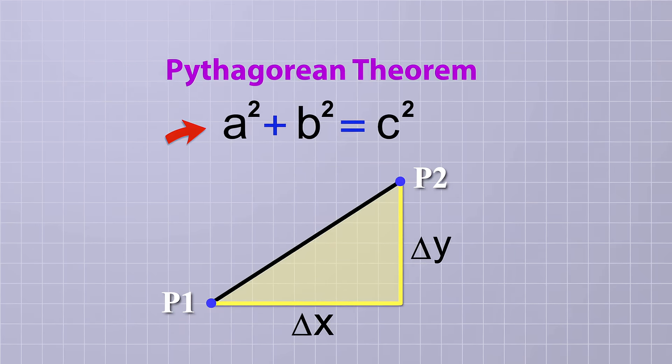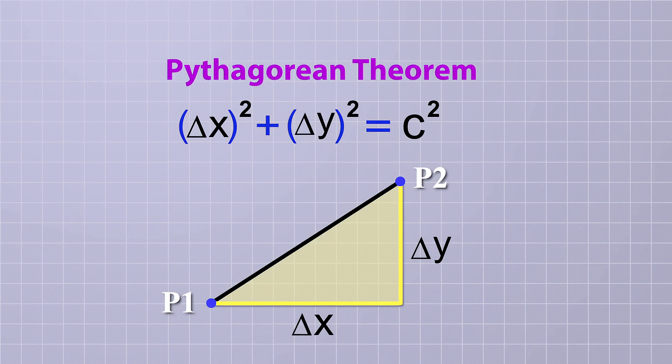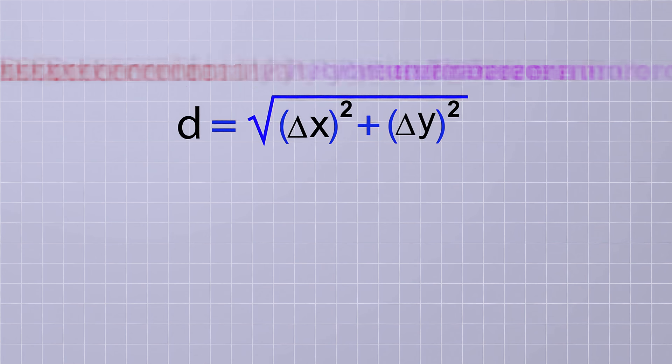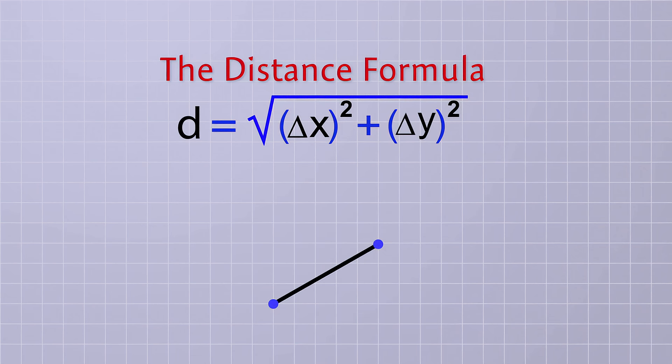You're used to seeing that theorem in this form. a squared plus b squared equals c squared. Since a and b are the lengths of the horizontal and vertical sides, we can plug in delta x and delta y instead. And instead of c squared for the hypotenuse side, let's use d squared because the length of the hypotenuse equals the distance between our two points. To solve for d, or distance, we take the square root of both sides and we get d equals the square root of delta x squared plus delta y squared. This special form of the Pythagorean Theorem is usually called the distance formula in algebra because you can use it to find the distance between any two points on the coordinate plane.